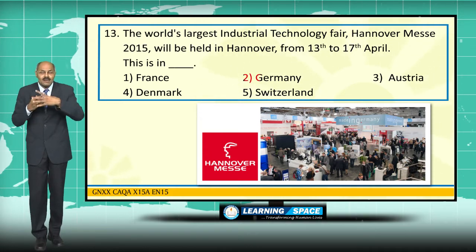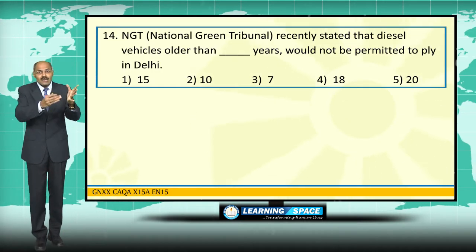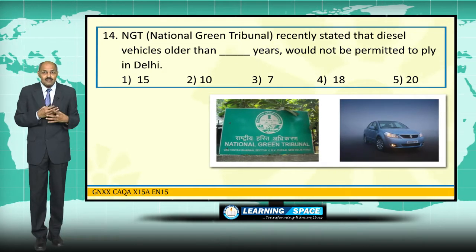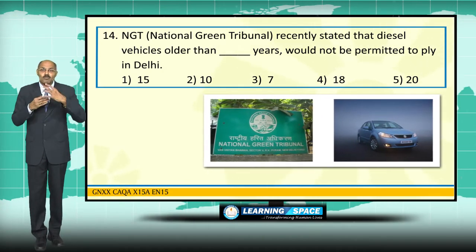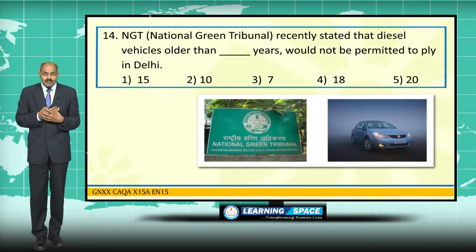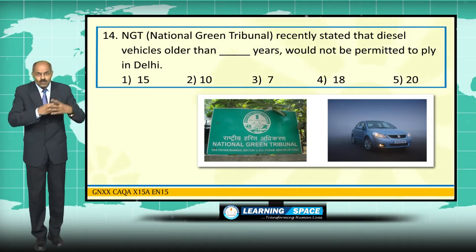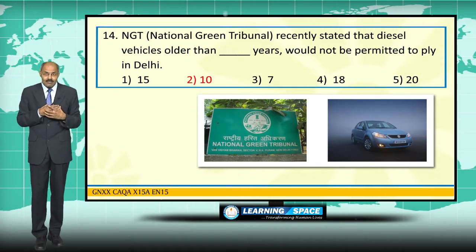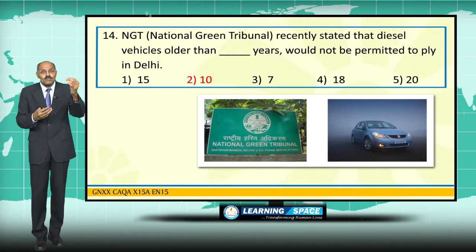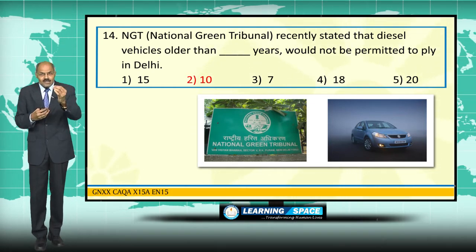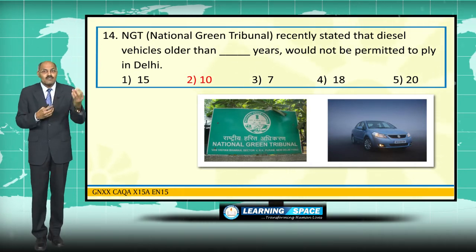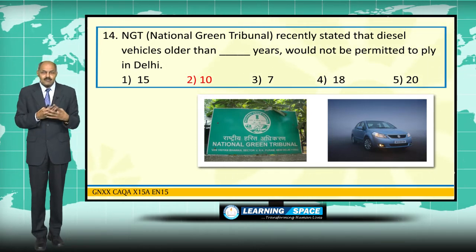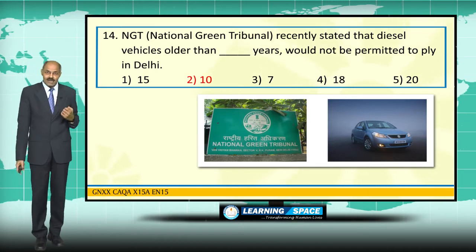The National Green Tribunal (NGT) recently stated that diesel vehicles more than 10 years of age would not be permitted to ply in Delhi. The state government is contemplating approaching the tribunal, as this legislation may affect the lives of several people. From an environmental point of view it is fine, but enforcing this type of legislation considering the socio-economic aspect may be difficult.